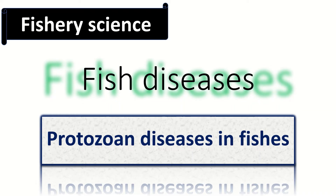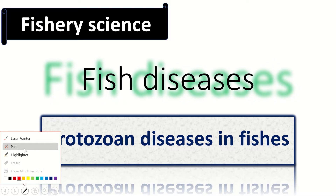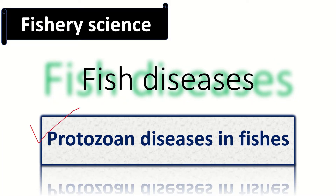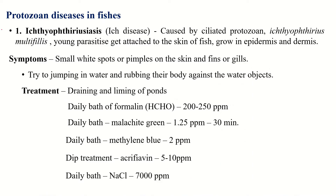Hello students and welcome. In this video we are going to discuss about some protozoan diseases that harm fishes. The first protozoan disease is Ichthyophthiriasis, also called ICT disease. This disease is caused by a ciliated protozoan named Ichthyophthirius multifilis.